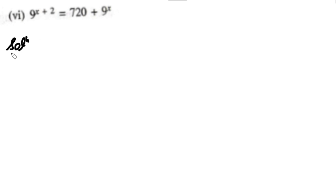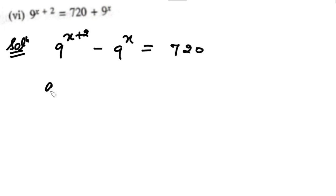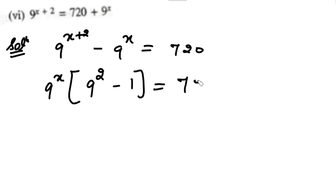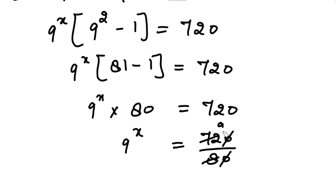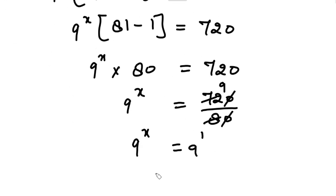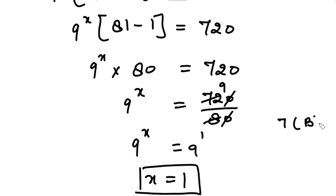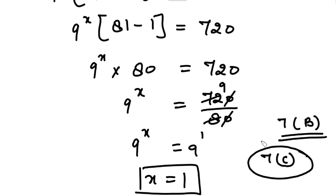In the last part, collecting exponential terms on the left side: 9 raised to the power X is common, giving 9 raised to the power X times (9 raised to the power 2 minus 1) equals a constant. Since 81 minus 1 is 80, we get 9 raised to the power X equals 9, meaning X equals 1. We have now completed Exercise 7B. In today's lecture, that's all. In the next lecture we will cover Exercise 7C and miscellaneous exercise unsolved problems. Goodbye, take care.